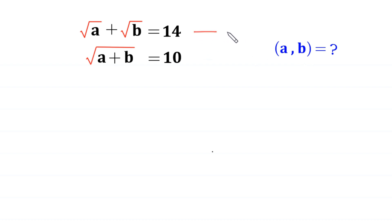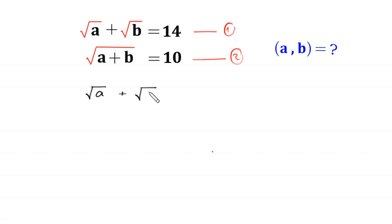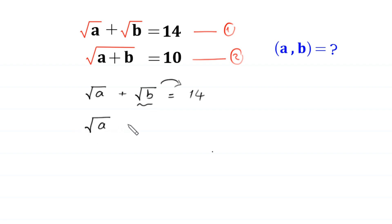Let us call this equation 1 and this equation 2. From equation 1, root a plus root b is equal to 14. We move this root b to the right hand side, so this will become root a is equal to 14 minus root b.